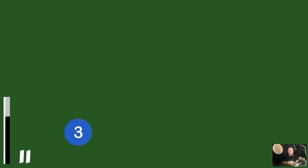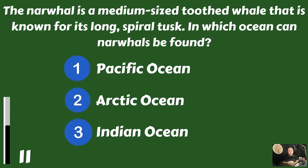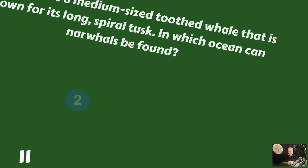The narwhal is a medium-sized toothed whale known for its long spiral tusk. In which ocean can narwhals be found? The Pacific, the Arctic, or the Indian Ocean? You'll find those in the Arctic Ocean.